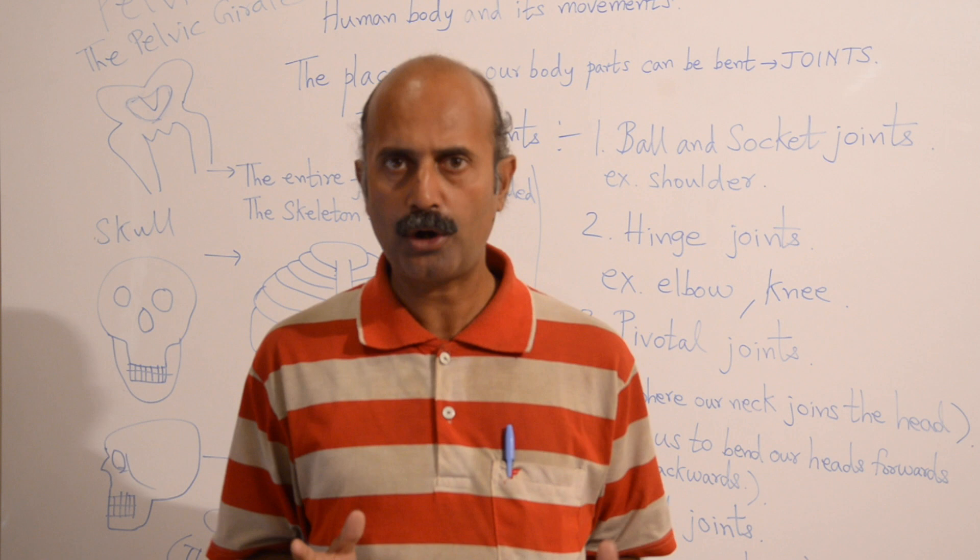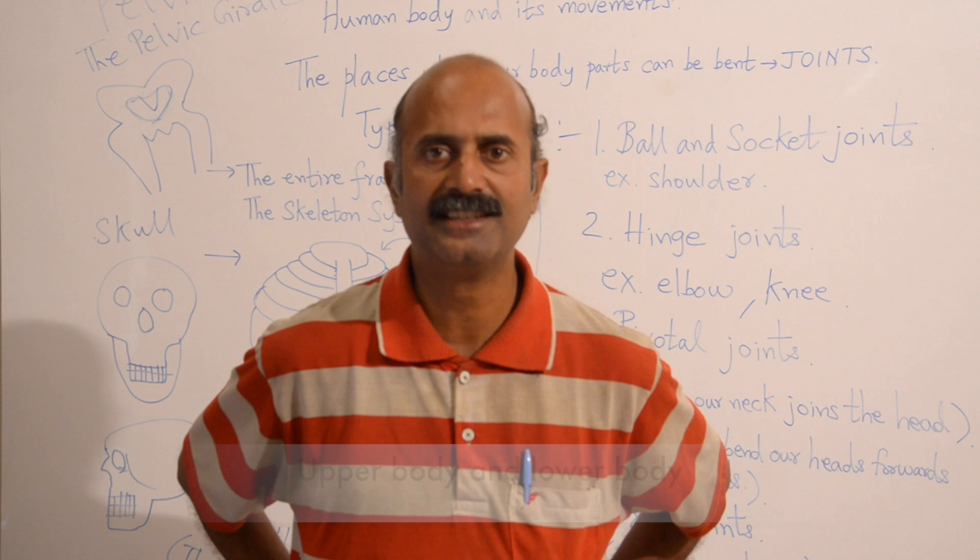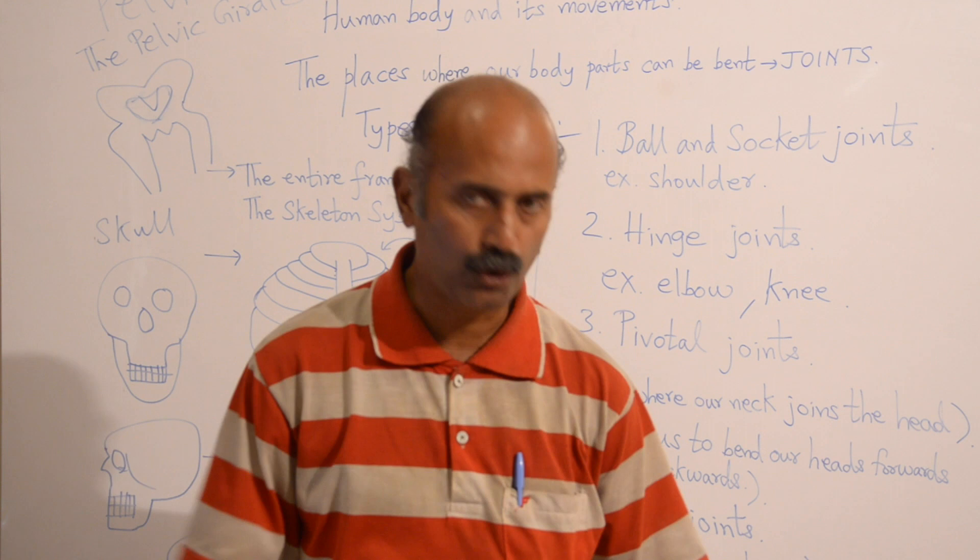Our bodies are divided into two parts — upper body and lower body. We have a plate-like structure known as the diaphragm. The body part above the diaphragm is called the upper body, and the body part below the diaphragm is the lower body.